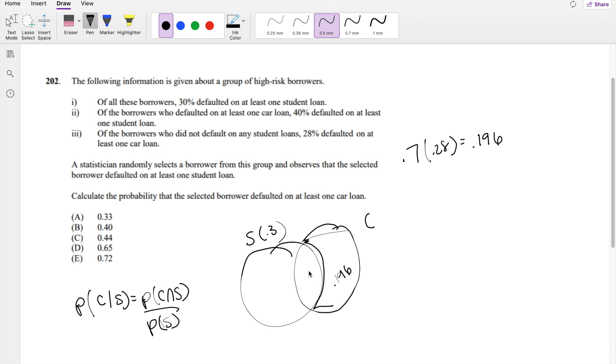Okay, I'm going to assign a variable here. This is going to be X. So then we can say of those borrowers who defaulted on at least one car loan, so this part right here, 0.196 plus X, 40% defaulted on at least one student loan. So 40% of these defaulted on a student loan. So that's going to be equal to X.